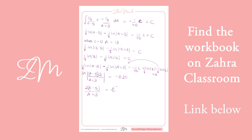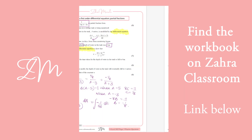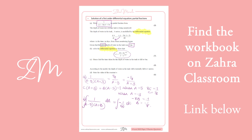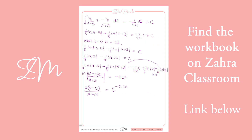To get rid of the ln, we exponentiate both sides: the right side becomes e to the minus 0.2t. At this point you have 6 out of 7 marks, so don't spend too long on manipulation. Rearrange to make a the subject: multiply out, collect a terms, factor out a, and you'll have your answer.